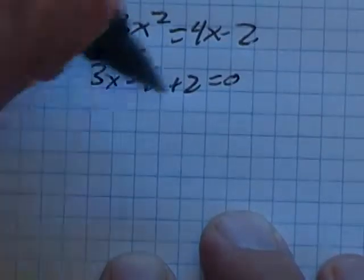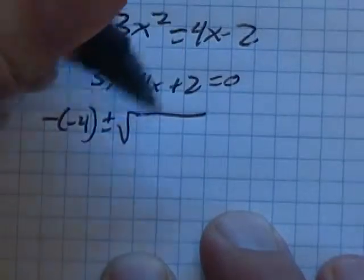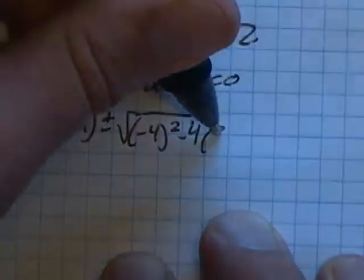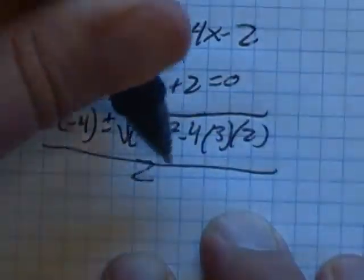So the quadratic formula, negative b plus or minus the square root of b squared minus 4 times a times c, all over 2 times a.